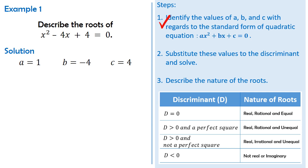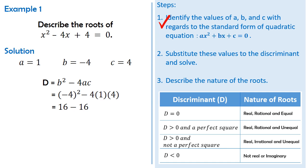Let us have step 2: substitute these values to the discriminant b squared minus 4ac. We have the square of negative 4 minus the product of 4, 1, and 4. The square of negative 4 is equal to 16, and the product of 4, 1, and 4 is also equal to 16. So 16 minus 16 will give us a discriminant equal to zero.